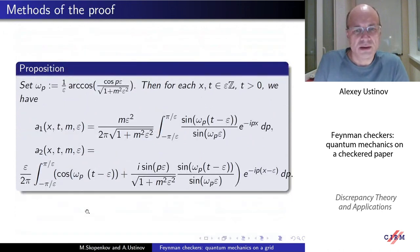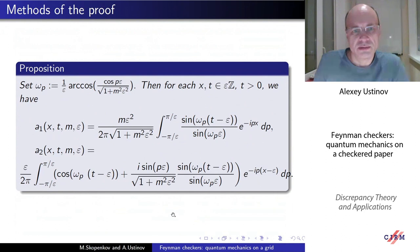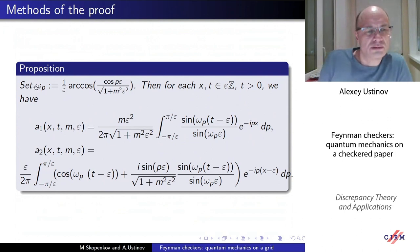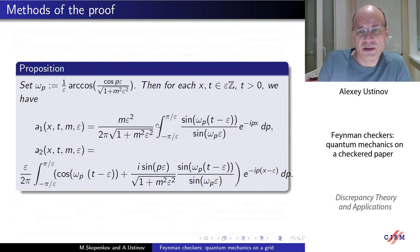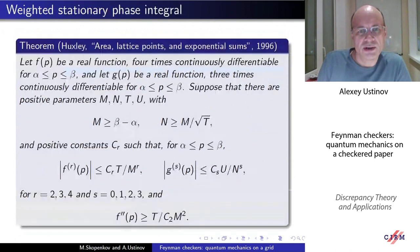What about the methods? The proof consists of two steps. The first step is a Fourier transform — we can express our functions a1 and a2 as Fourier integrals. This result is not new; something similar was published in previous papers. But what is important here is that these integrals are highly oscillating integrals.